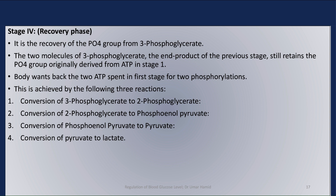Stage 4 of glycolysis is the recovery phase. In this stage, the phosphate group is recovered from 3-phosphoglycerate. The two molecules of 3-phosphoglycerate, which are the end products of the previous stage, still retain the phosphate group originally derived from ATP in stage 1. The body wants back the two ATP spent in the first stage for the two phosphorylations.